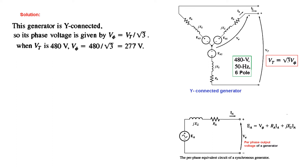The generator is Y-connected, so we take a single phase. The phase voltage is V-phi = V-terminal / √3. The line voltage is 480 V, therefore 480 / √3 = 277 V. So the phase voltage is 277 V.